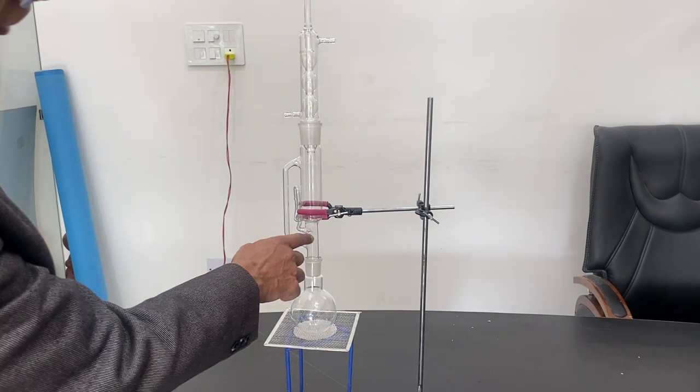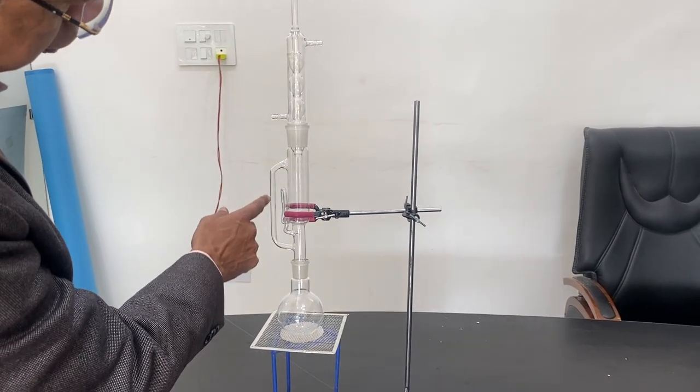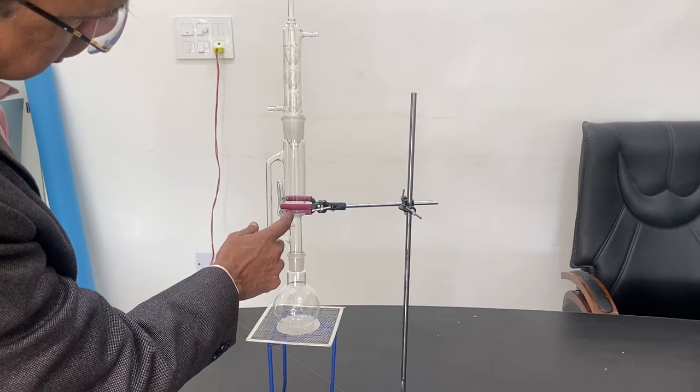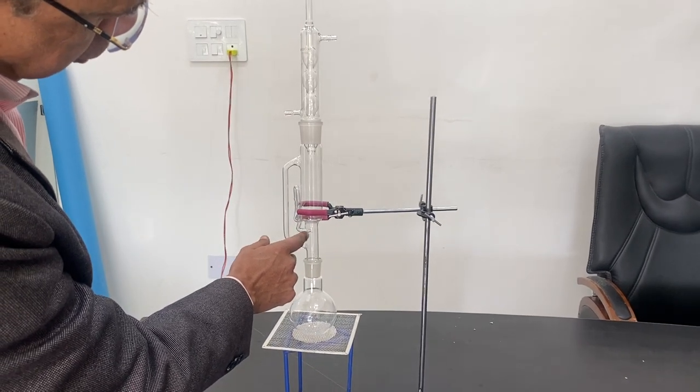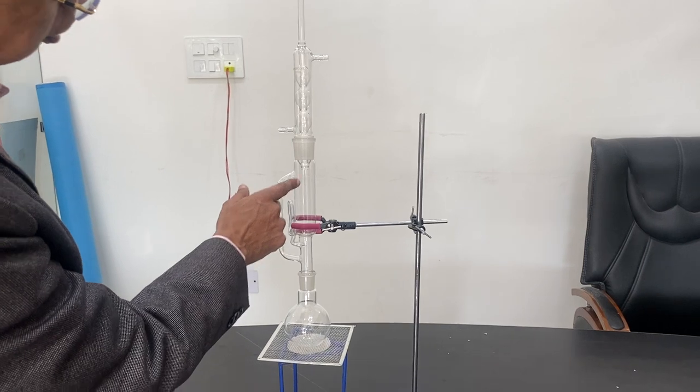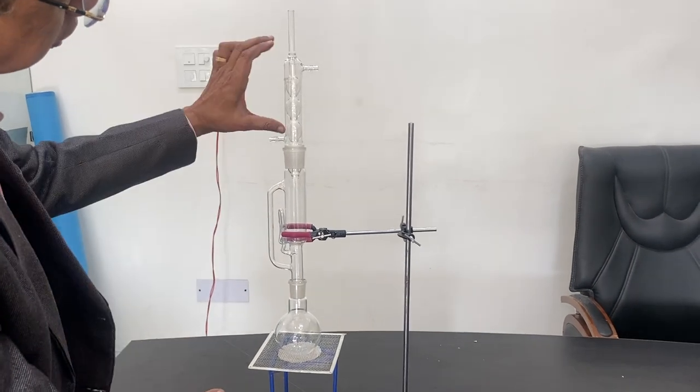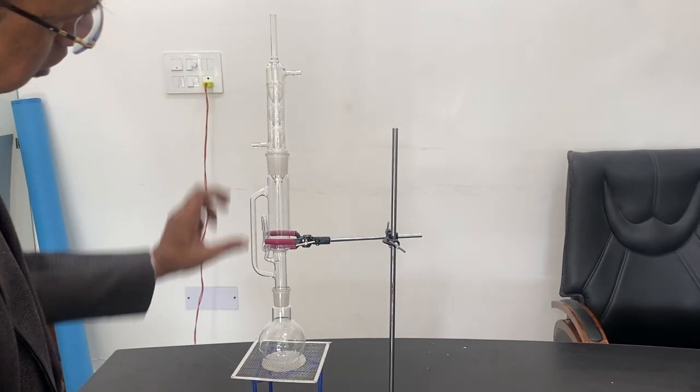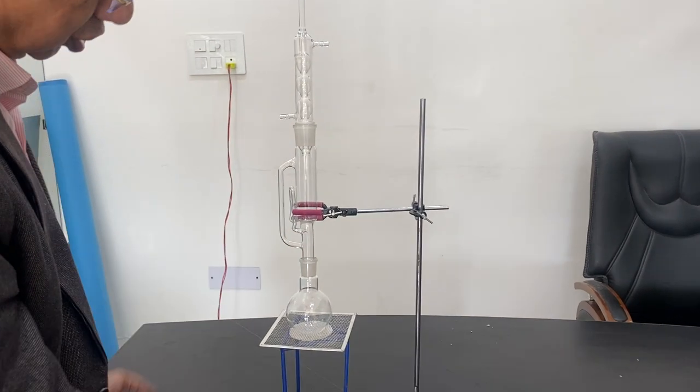This has tubes which pass back to this section, from the center, and pass to this section. So there are two tubes - the condenser part, Allihn condenser, bulb type, and round bottom flask.